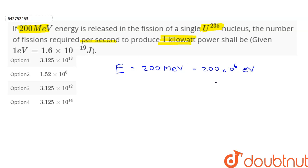We can convert this into joules by using the relation 1 eV = 1.6 × 10^-19 J. Therefore, the energy released per fission is equal to 200 × 10^6 × 1.6 × 10^-19 joules.